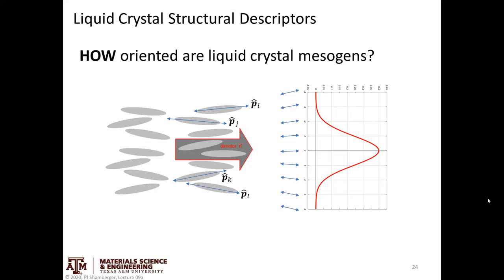Howdy. We're going to pick up where we left off and now we're going to start talking about different kinds of structural descriptors that we use to describe liquid crystals. This is a term that allows us to answer the question: how oriented are liquid crystal mesogens?